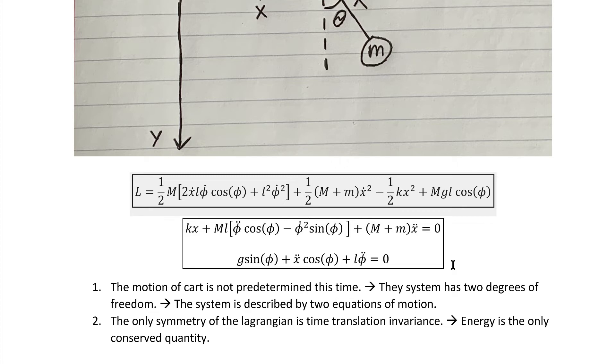Working through the normal procedure, we got this Lagrangian and these equations of motion. Now let's take a look at this and see what we can learn. The motion of the cart is not predetermined this time, so the system has that extra degree of freedom, and those two degrees of freedom cause us to have two equations of motion instead of one.